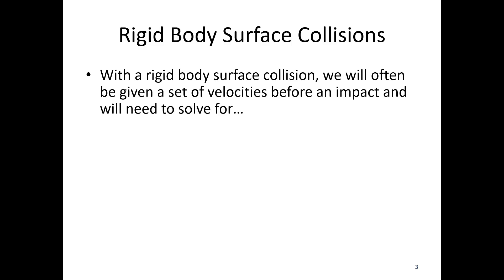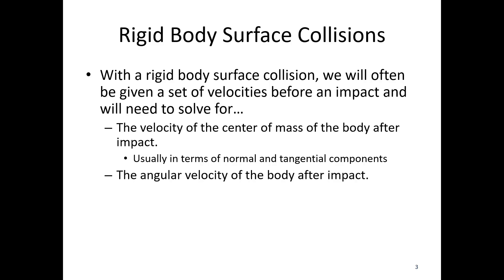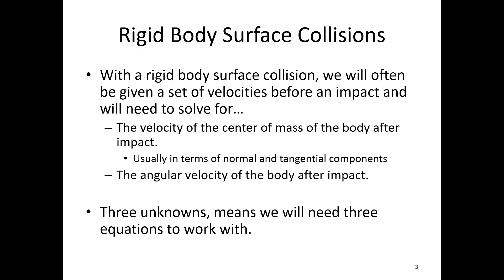We're often going to be given a set of velocities before an impact and need to solve for a couple things: the velocity of the center of mass after the impact — in terms of normal and tangential components — as well as the angular velocity of the body after the impact. We've got basically three unknowns, which means we're going to need three equations to work with.